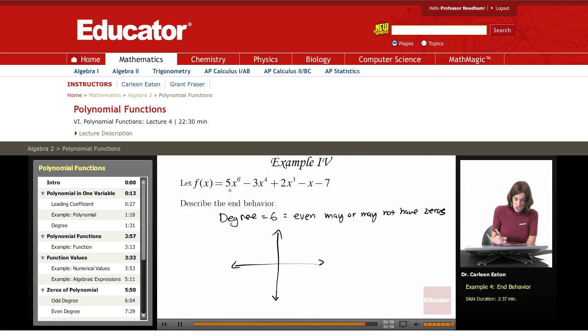The leading coefficient here is 5, and that's positive. So since it's positive, both ends of the graph go upward, just like with a parabola with a positive leading coefficient with quadratic functions.